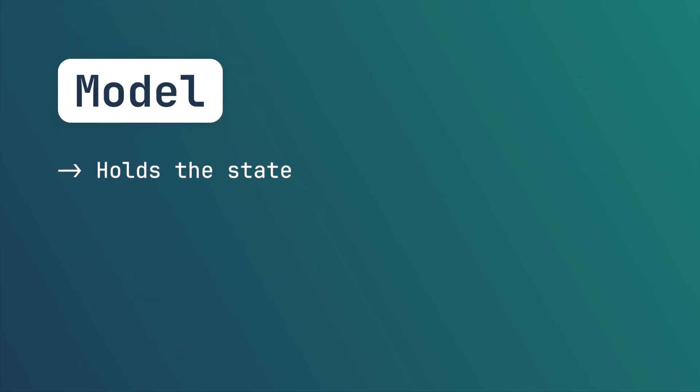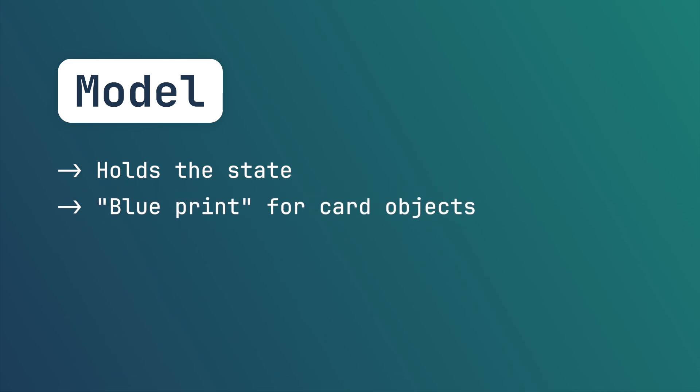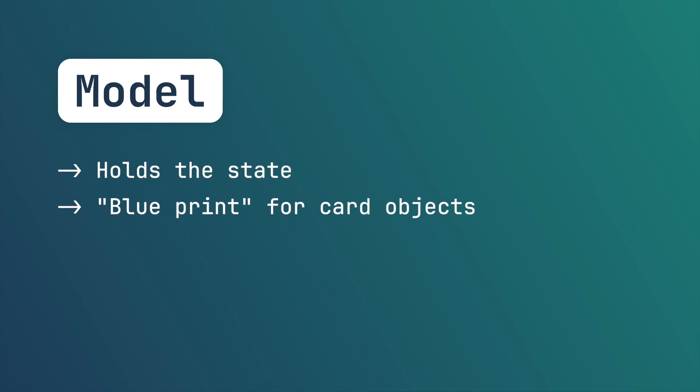The state of our card will be stored in the model instead — or better said, in the objects created from our model. The model will hold our card's current stats, modifications, effects, costs, and so on. And the last component is the data.